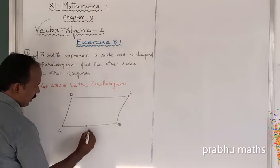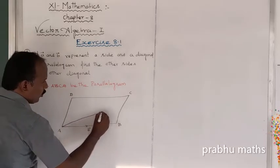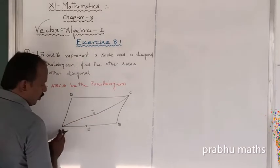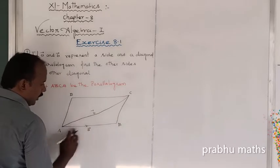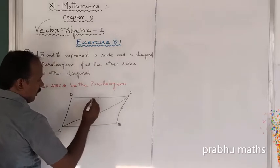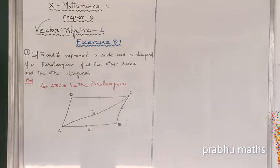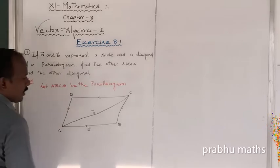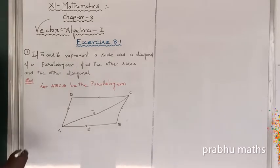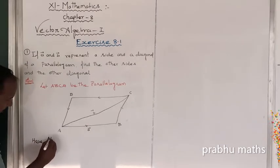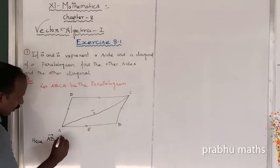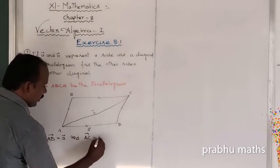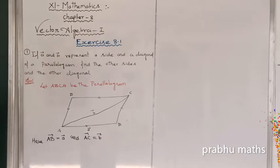So one side is a vector, and the next diagonal is going to b vector. One side is a vector, one diagonal is b vector. So the vector passing through the path is A to B, B to C, C to D, D to A. So AB vector is equal to a vector. The diagonal AC vector is equal to b vector.